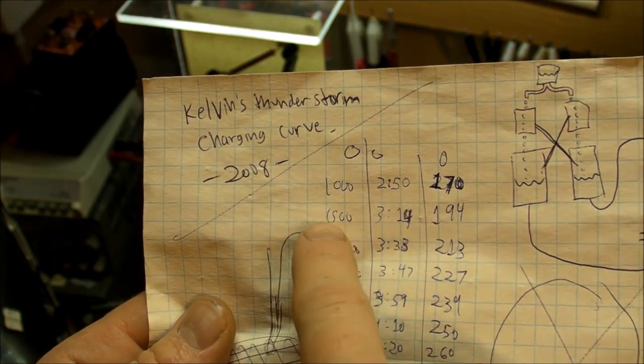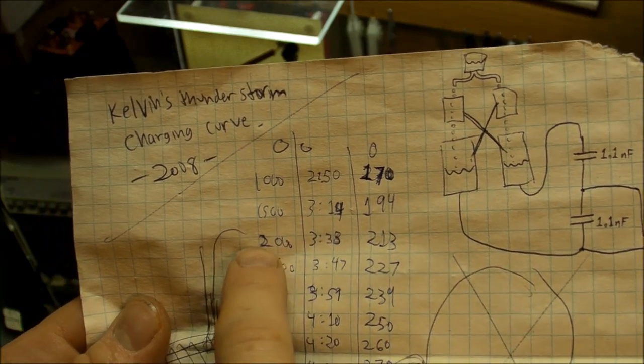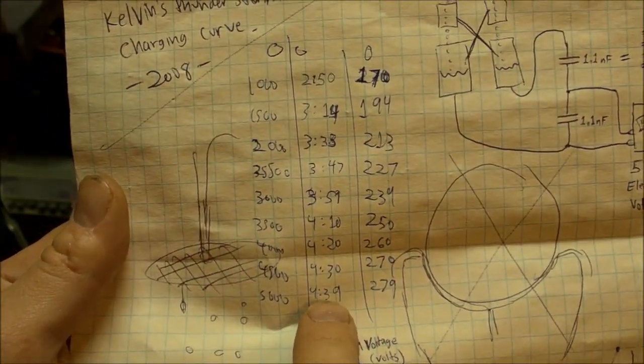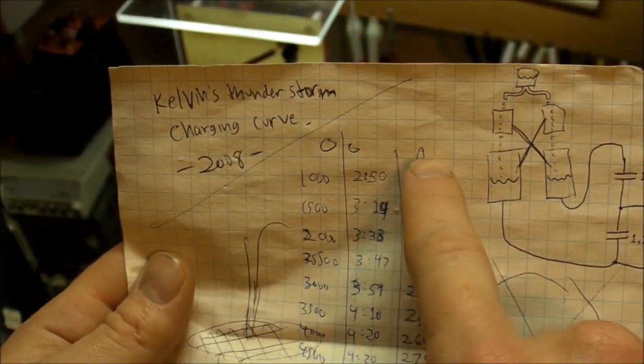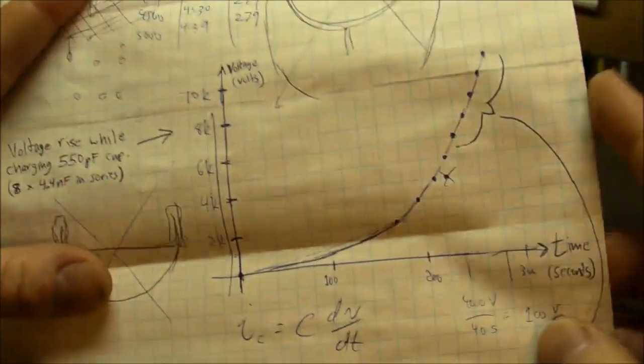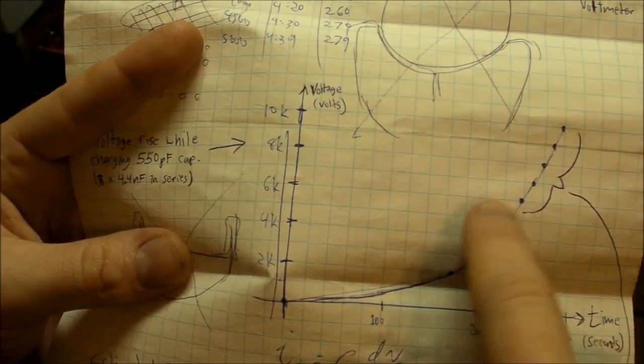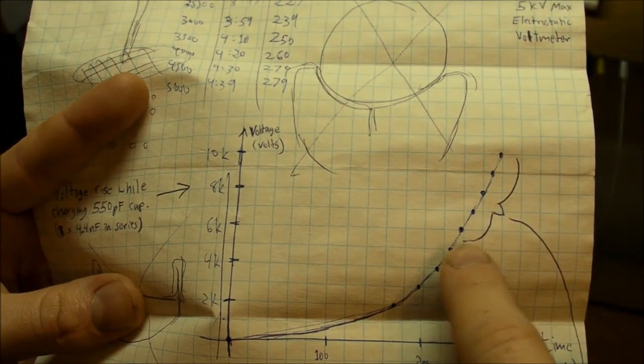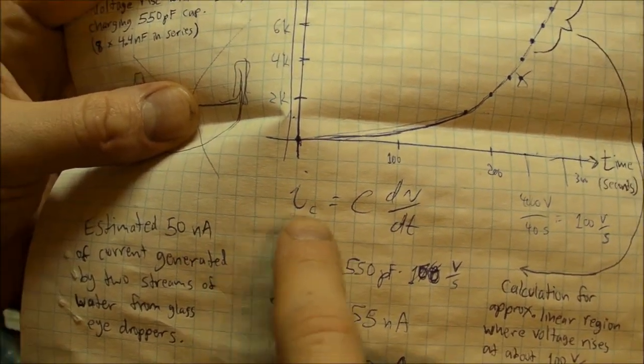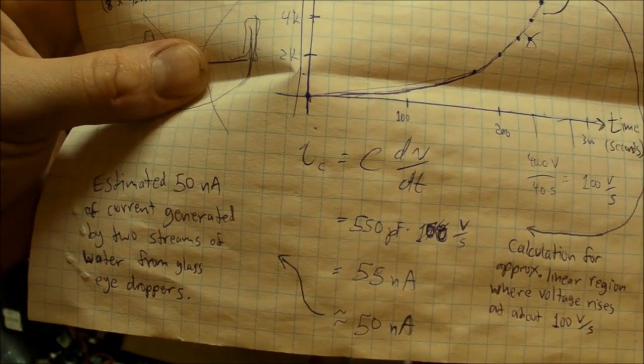So what I did was I just took the time starting at zero, zero volts, zero time. And at 1,000 volts I measured it was two minutes 50 seconds. When the needle hit 1,500 volts, that was at three minutes and 14 seconds. And 2,000 volts, three minutes 33 seconds, and going on down the line up to almost five minutes for 5,000 volts. And over here in the right column, this is the total number of seconds for the given amount of time. And I plotted it all down here, time and voltage. And you can see how there's sort of kind of an exponential rise.